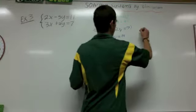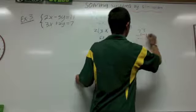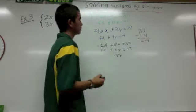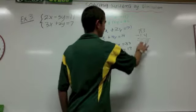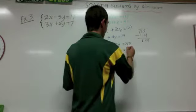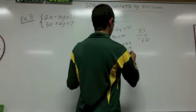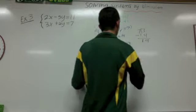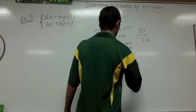So that equals negative 33 plus 14, which equals negative 19. So 19y equals negative 19. We divide both sides by 19 and now we have y equals negative 1.